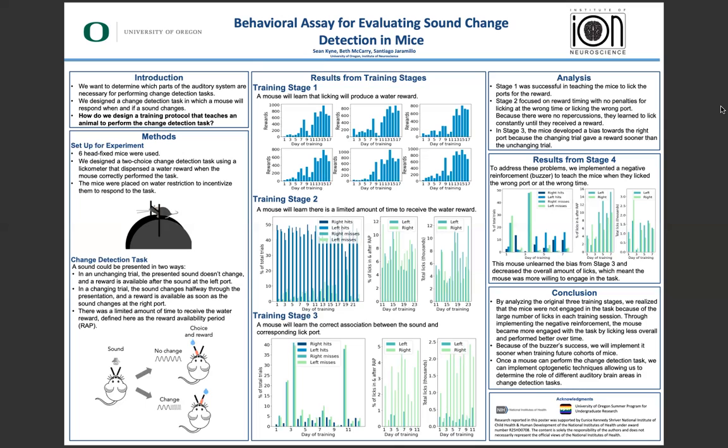In reviewing the training stages, I learned a few things. In stage two, I focused more on the timing of the reward without penalties, and due to the lack of repercussions, they learned to constantly lick until they had received a reward. In stage three, the mice developed a bias toward the right port since the changing trial gave the reward sooner than the unchanging trial. I concluded that the mice were disengaged with the task and licking excessively.